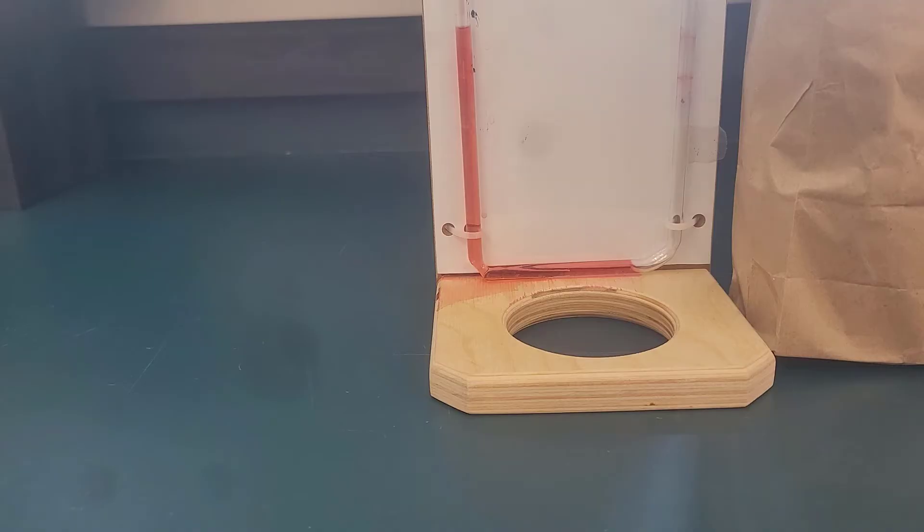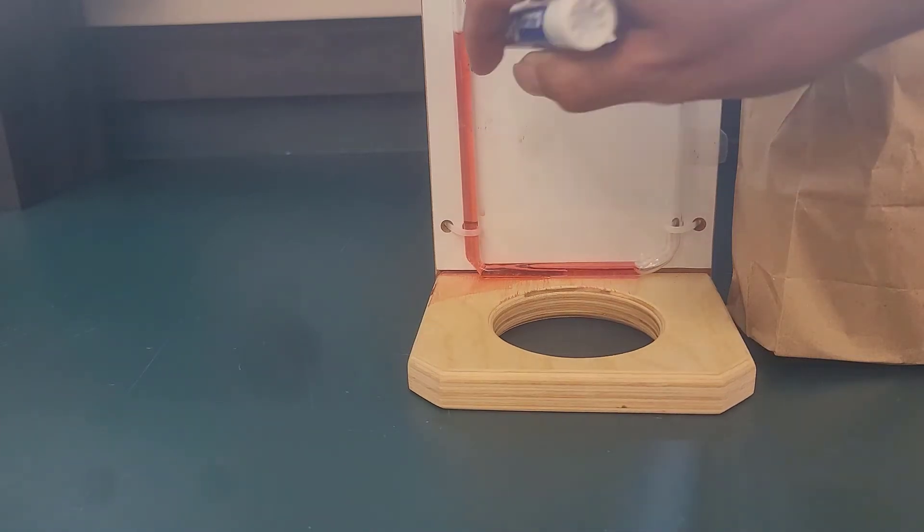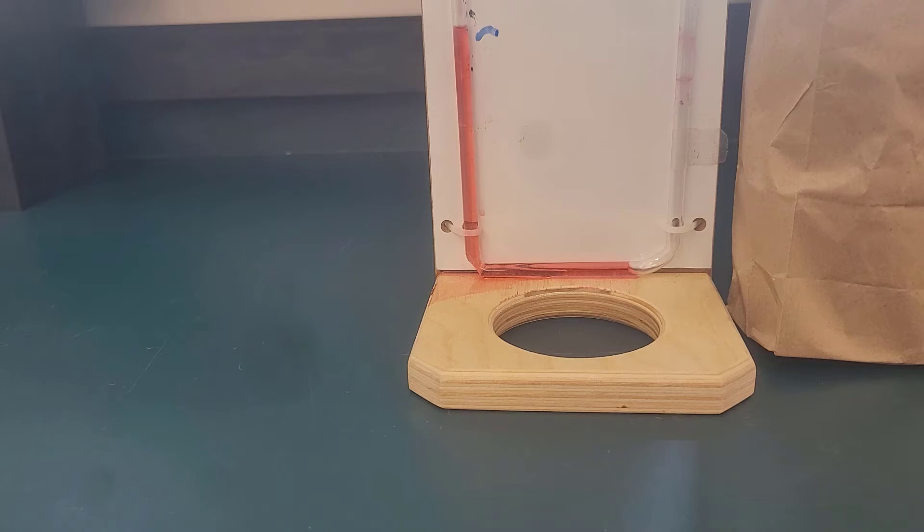So here we go. This will be trial number one. There's our fluid level. I'm going to mark the fluid level there and inject the air. You can see the fluid level going up, and this is when you start your timer. You need to record how long in seconds it takes for that fluid level to drop back to the original line.